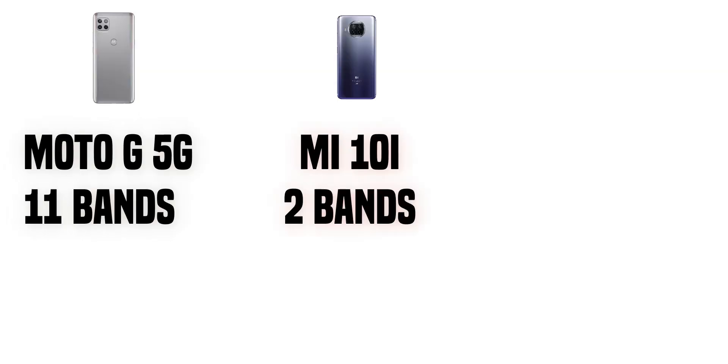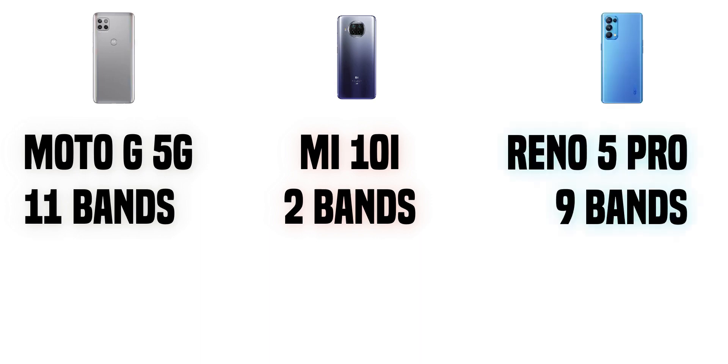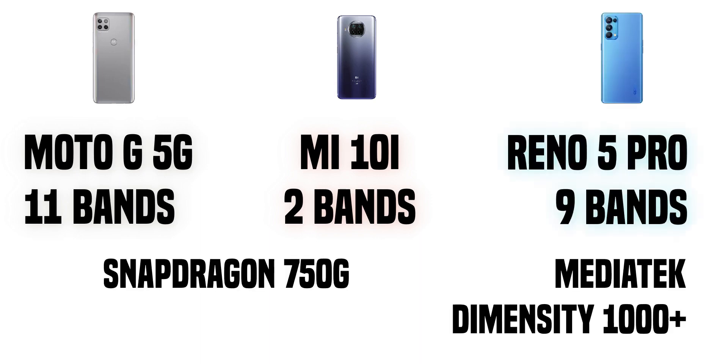Since we don't know what bands will be used, this is a problem — especially for budget and mid-range devices where there's a price limit on how many bands can be included. Manufacturers have to take an educated guess. For example, the Moto G 5G has 11 bands, the MetoNai 5G only has two bands, and the OPPO Reno 5 Pro has nine bands. The inconsistency is clear.